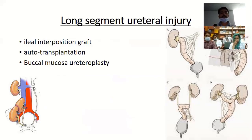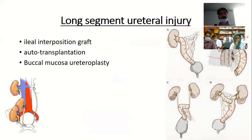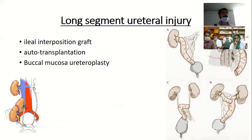In emergency settings, complex reconstruction is not done. After the patient is stable, an ileal graft can be interposed to bridge the defect, in various configurations. Buccal mucosal urethroplasty can also be used where multiple surgeries for ureteric repair have been done. Auto-transplantation is another option. These are all elective procedures and cannot be done in unstable emergency patients.